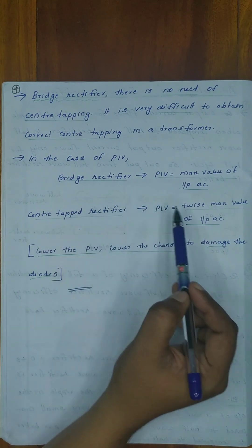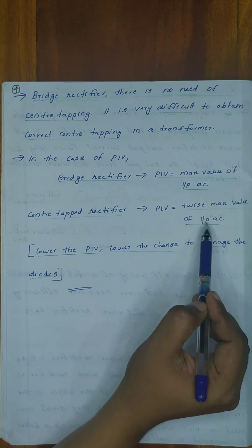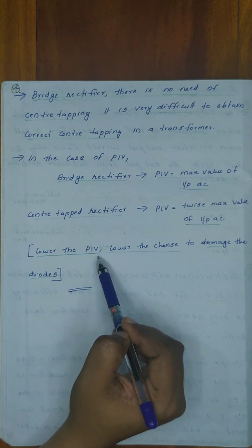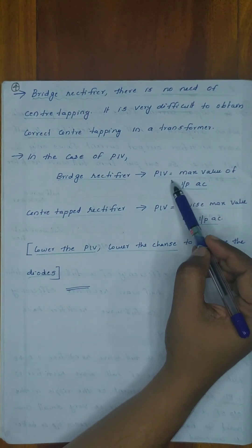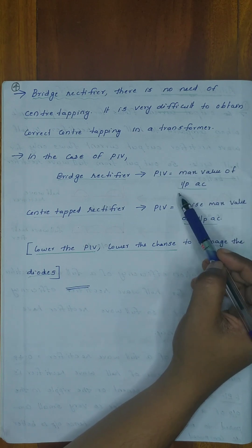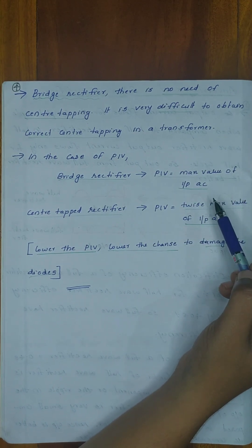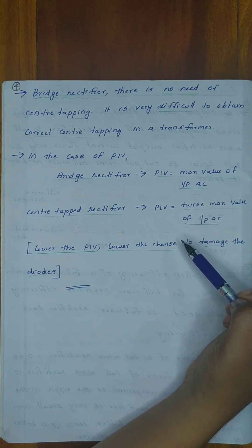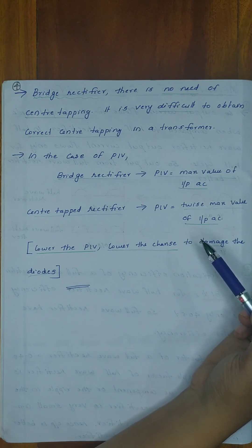In the center tap rectifier, the peak inverse voltage is twice the maximum value of the input AC. A lower peak inverse voltage means a lower chance of damaging the diode. In these points, we have learned about the advantages of a full wave rectifier. Thank you.